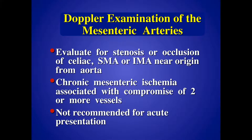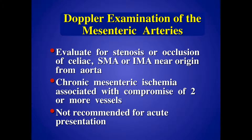For the mesenteric artery evaluation, we're typically going to look for abnormalities in blood flow in all three vessels — the celiac, the SMA, the IMA — dragging the sample volume from the aorta into the proximal portions of the vessels. For the diagnosis of chronic mesenteric ischemia, we need to see abnormalities in at least two of the three vessels. One vessel usually is enough because there's so much collateral circulation that the patient compensates with disease in only one vessel.